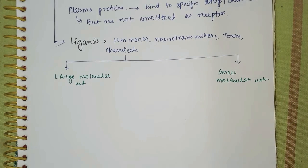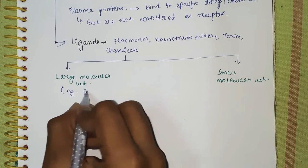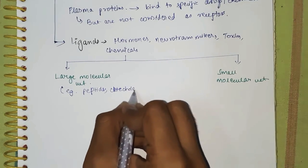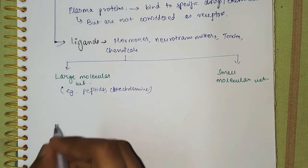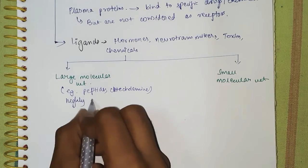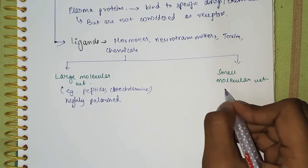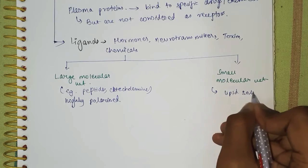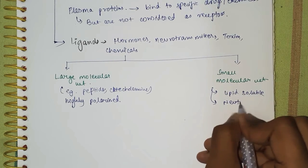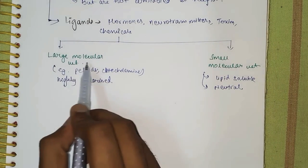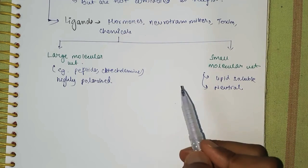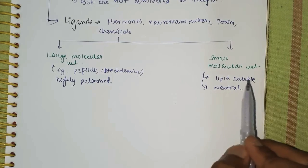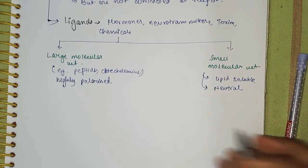Large molecular weight ligands are, for example, peptides and catecholamines, and they are highly polarized. Whereas small molecular weight ligands are either lipid soluble or neutral. The ligands with large molecular weight have receptors present outside the cell — that is, extracellular. And ligands with small molecular weight have receptors inside the cell — intracellular.